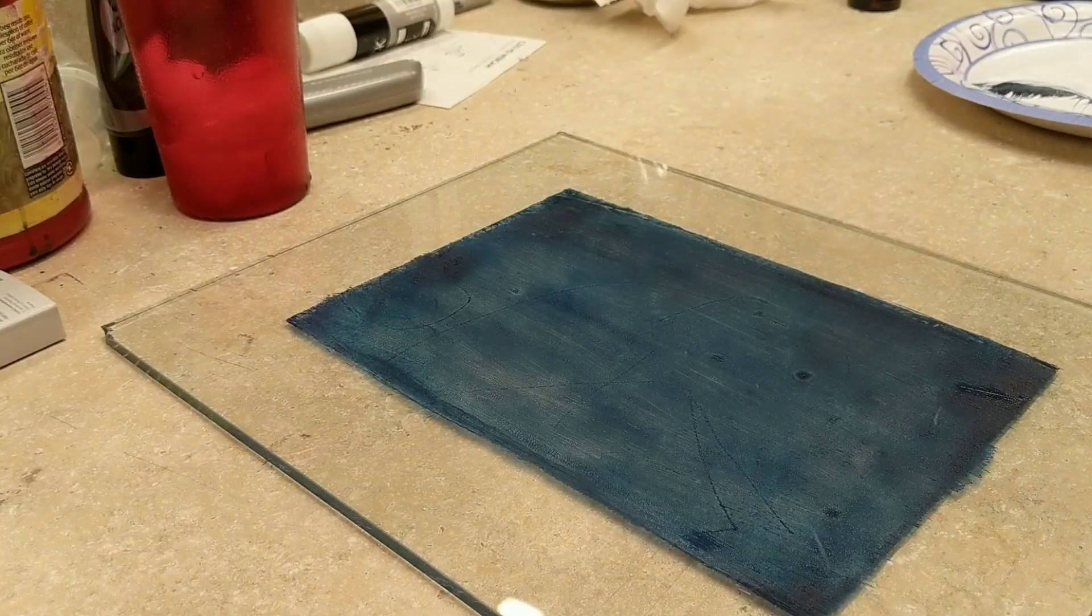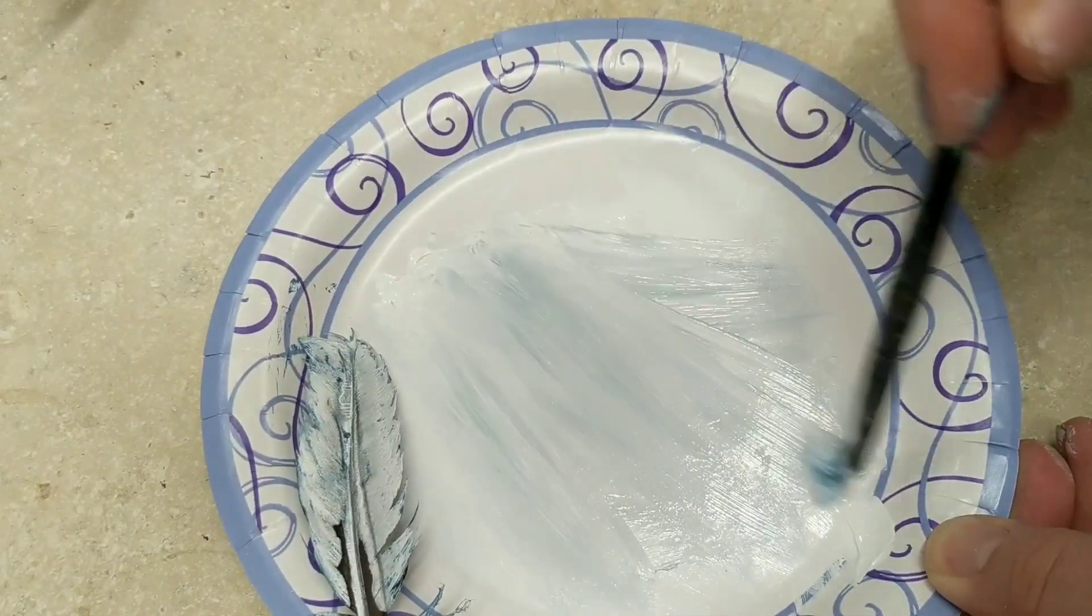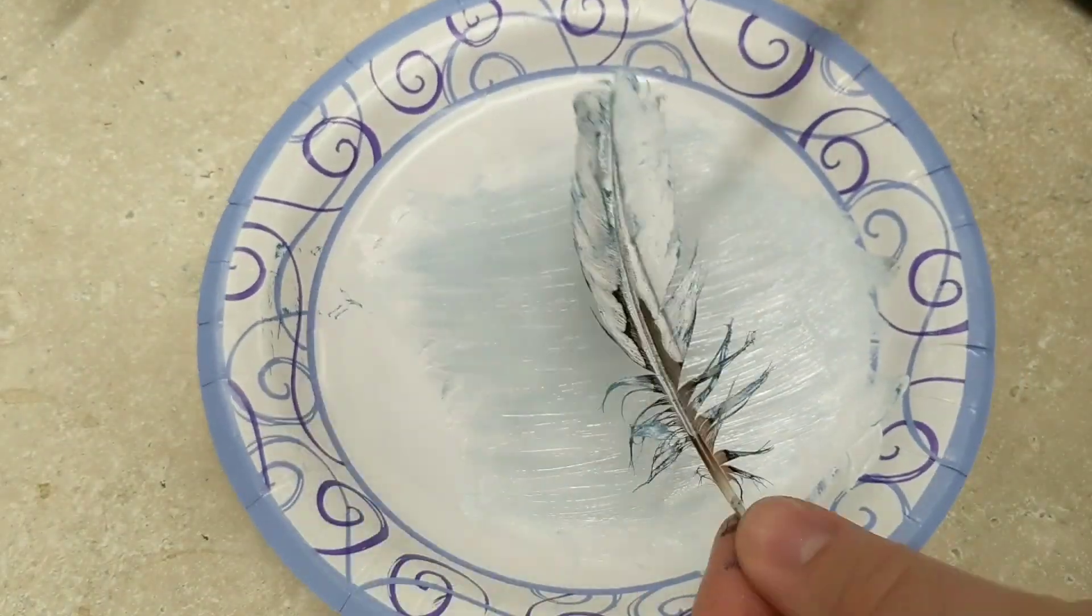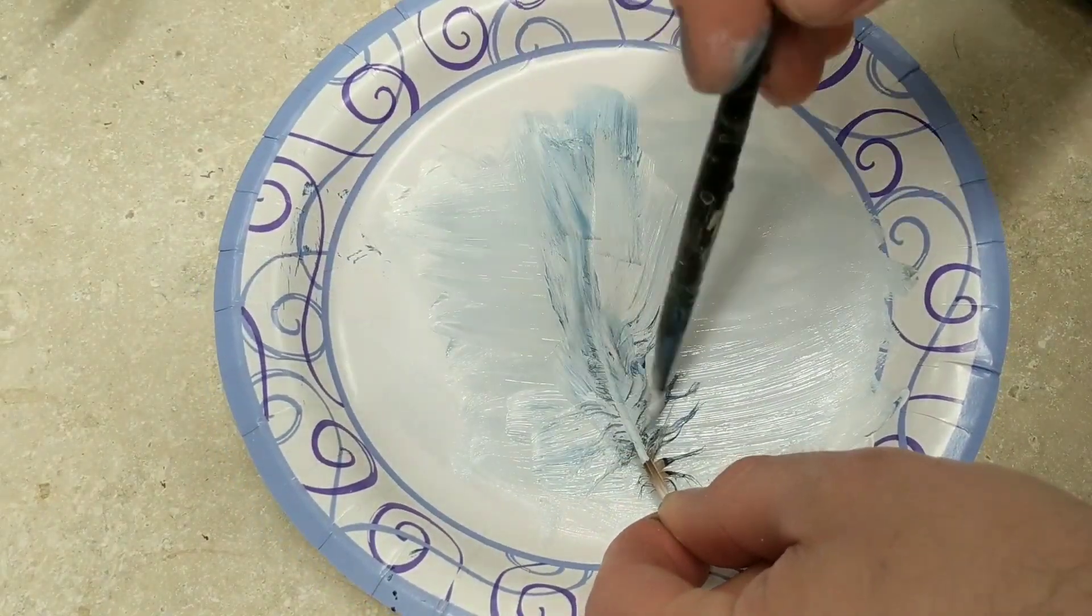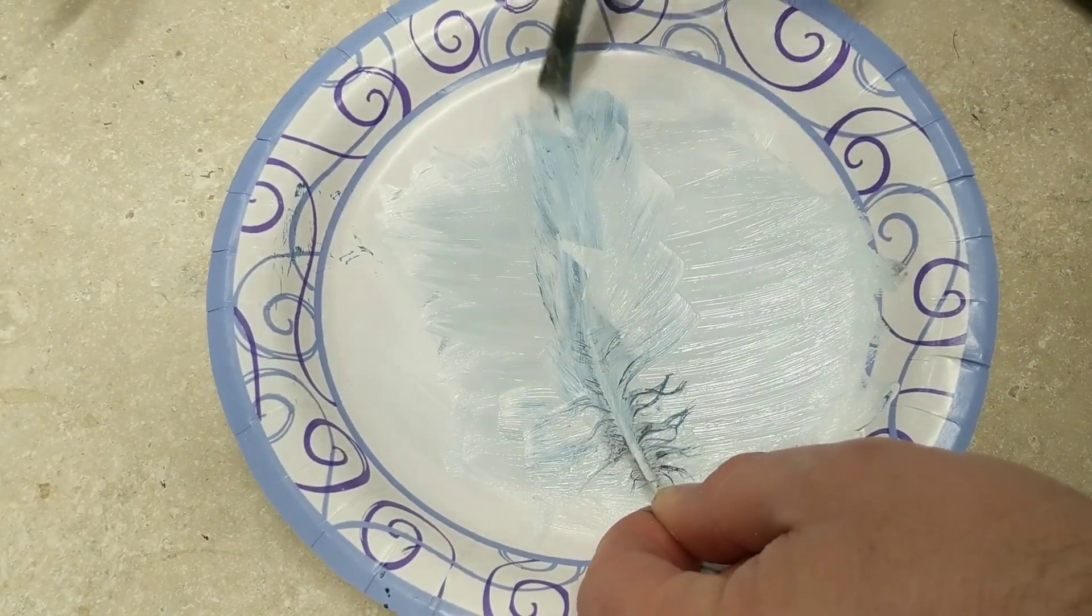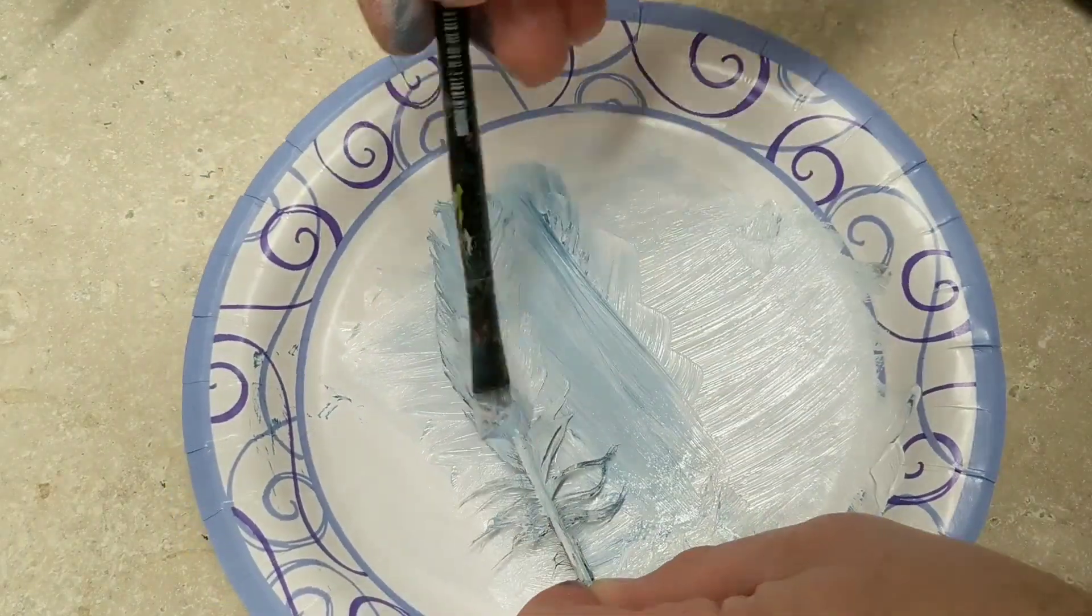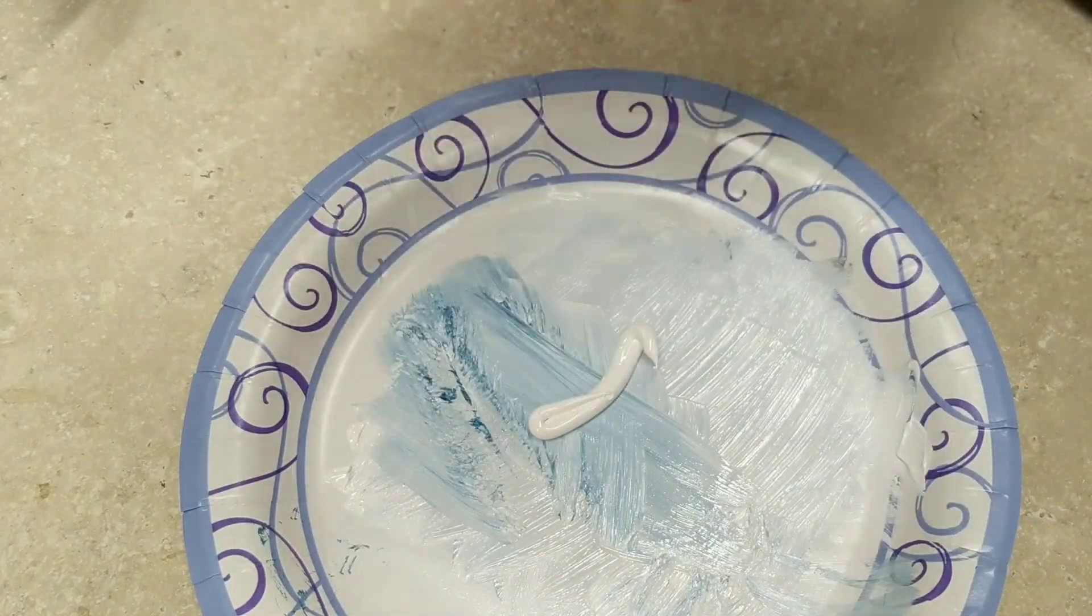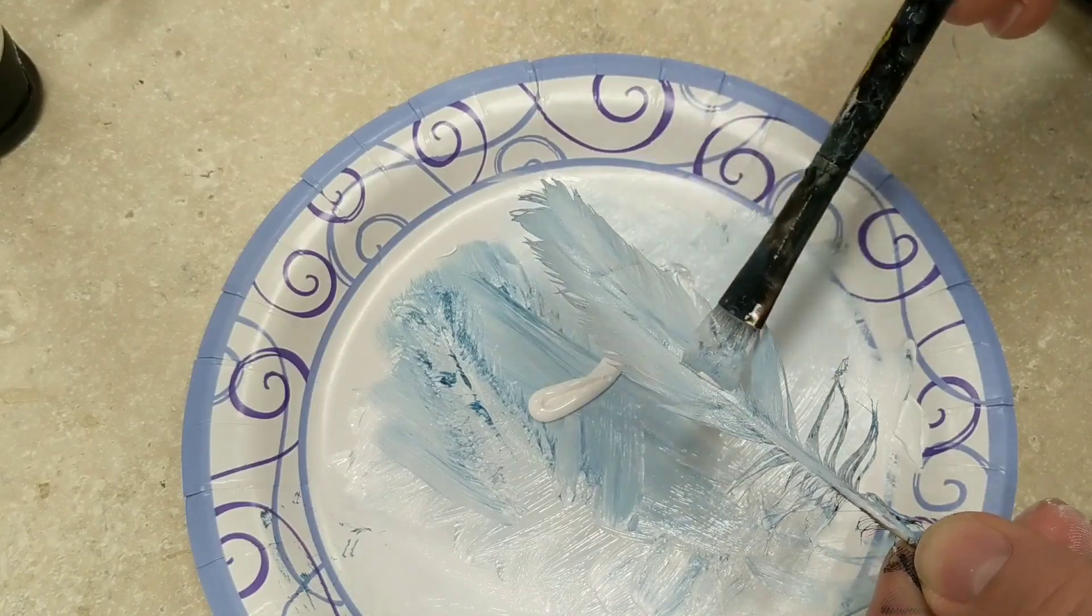And then I'm going to re-do this white. I used kind of a dirty brush for this, which is okay. It's going to make for another unique color. And then I squeezed out a little bit more white from the tube to kind of highlight the stem. Right here. Just put a little white paint there.